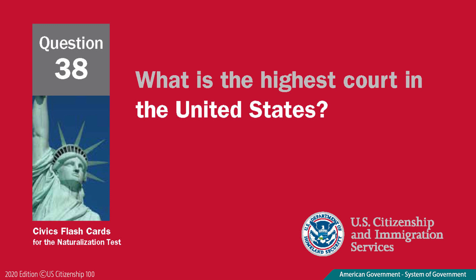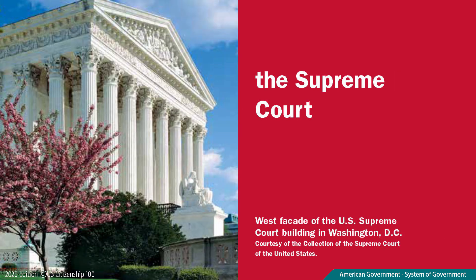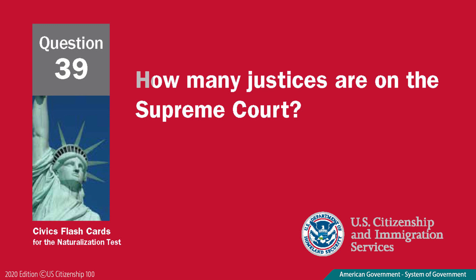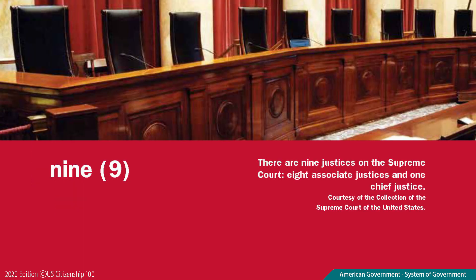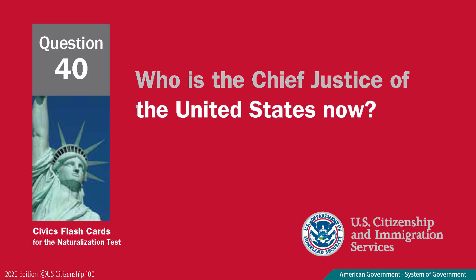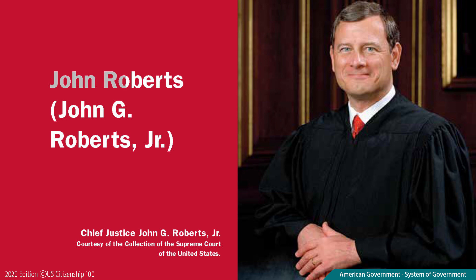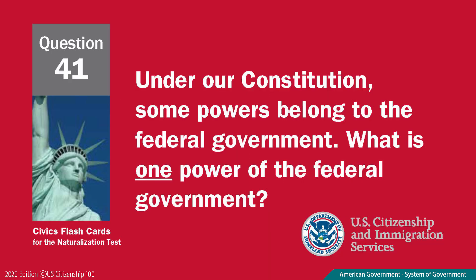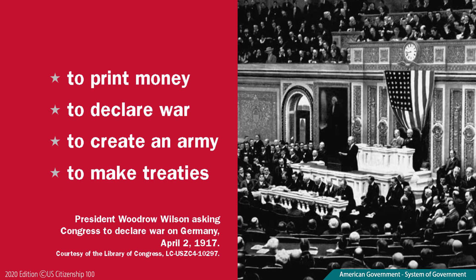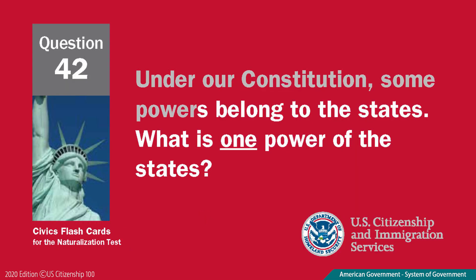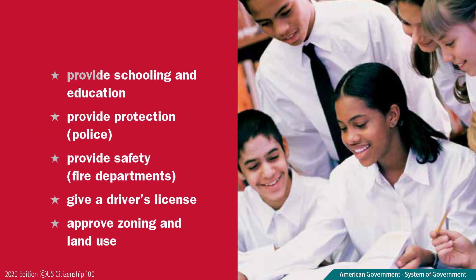What is the highest court in the United States? The Supreme Court. How many Justices are on the Supreme Court? Nine. Who is the Chief Justice of the United States now? John Roberts. Under our Constitution, some powers belong to the federal government. What is one power of the federal government? To print money. Under our Constitution, some powers belong to the states. What is one power of the states? Provide schooling and education.